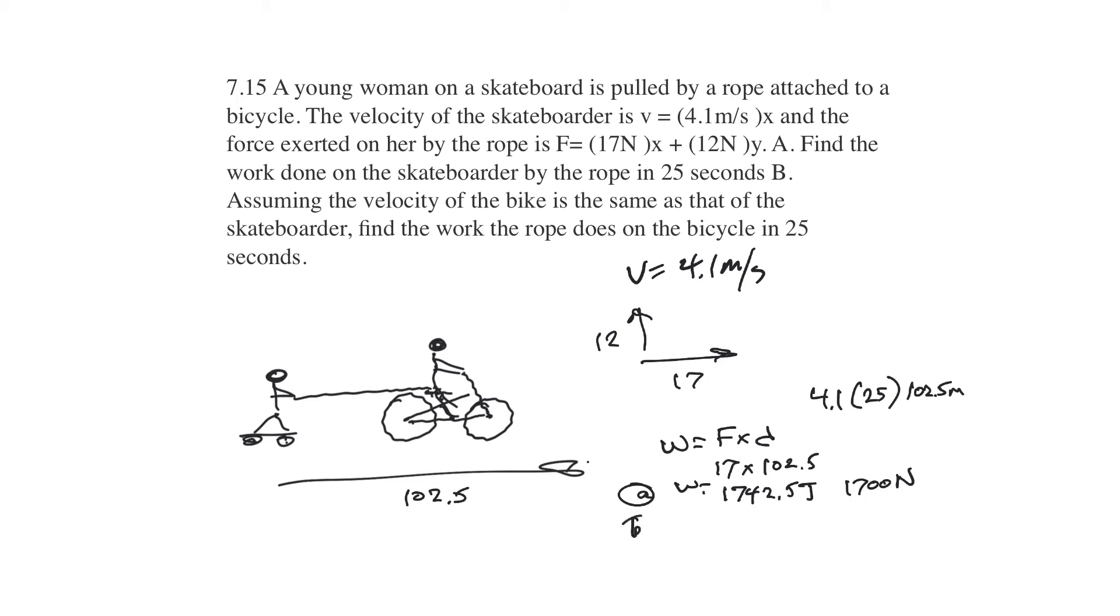B. Assuming the velocity of the bike is the same as that of the skateboarder, find the work that the rope does on the bicycle. All right. So this is easy. If she is going forward and the force, if the distance is forward and the force is forward, then the work is positive.